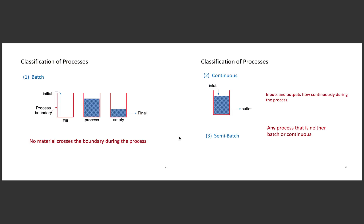As we can see here, a batch would be considered a transient or unsteady state because it does not have a continuous flow and time is a factor that plays into this. A continuous process would be a steady state because the flow of the process is continuous.